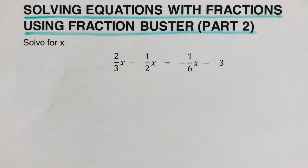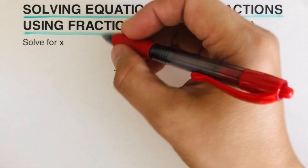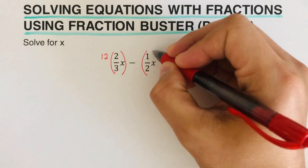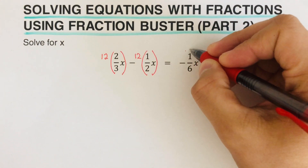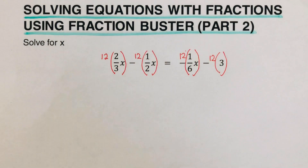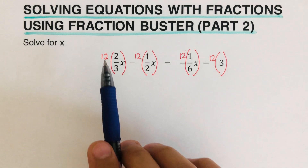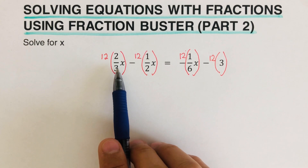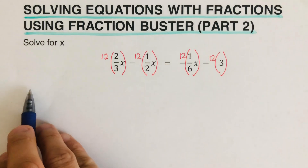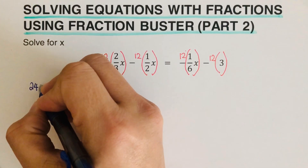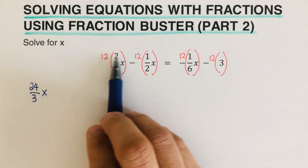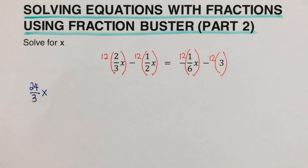To apply the LCM, we multiply each term in the equation by 12. An important note: we only multiply 12 by the numerator — so 12 times 2 is 24, giving us 24/3 x. Others sometimes mistakenly multiply 12 by both the numerator and denominator, but that is not how we do it.